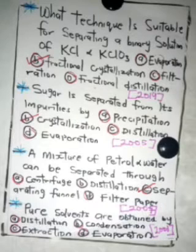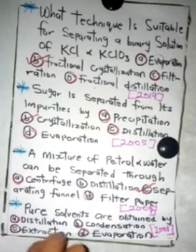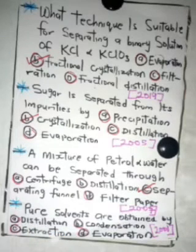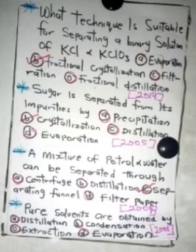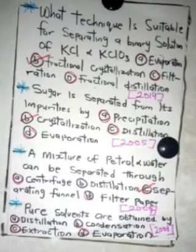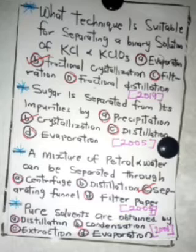The next question: pure solvents are obtained by — distillation, condensation, extraction, or preparation? The answer is distillation. Distillation involves heating a substance and condensing the vapor to collect the pure substance — for example, distilled water, which is free from impurities, while the impurities are left behind in the flask.